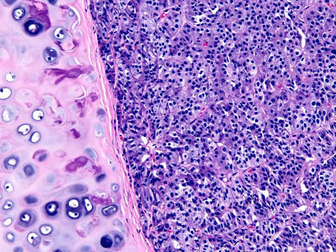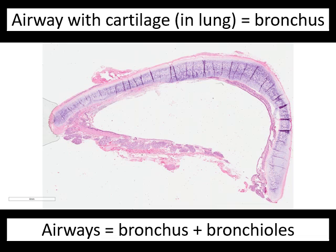On H&E, so many nuclei at different levels make it appear stratified, but it is not. At a deeper level of the same section, cartilage is visible abutting the tumor, confirming this is a bronchus, not a bronchiole. In summary: airways consist of bronchi and bronchioles. An airway with cartilage in the lung is by definition a bronchus. Bronchi also have submucosal salivary glands; bronchioles have neither cartilage nor submucosal glands. Bronchioles will be covered in a subsequent presentation.